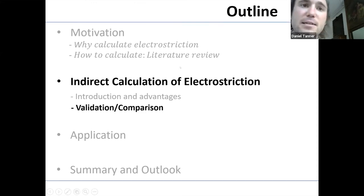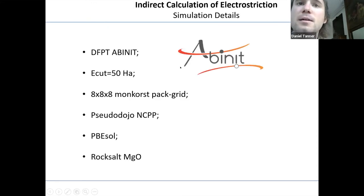So now we'll go into the, to prove that with some calculations and then to compare the actual things after running. So use DFPT and Abinit with a cutoff energy of 50 Hartree, 8 by 8 by 8, pseudo dojo norm conserving pseudo potentials and PBEsol. And we apply it to rock salt MgO as a test system.